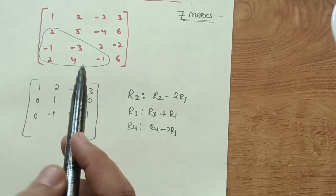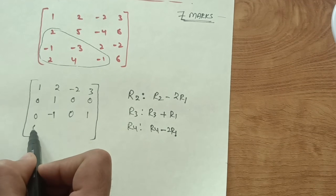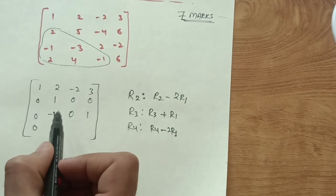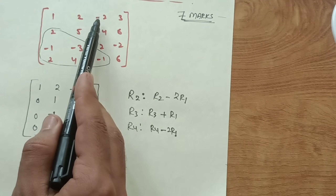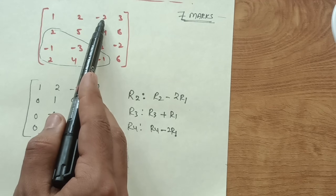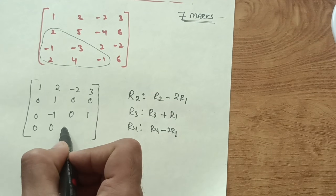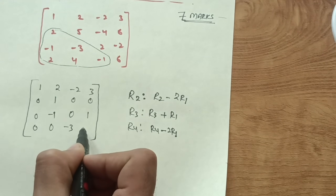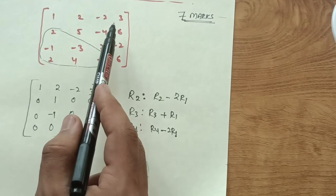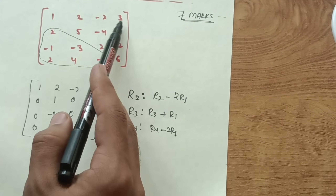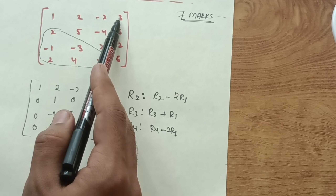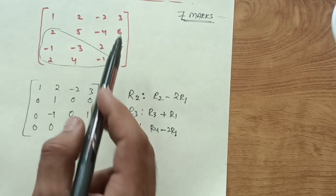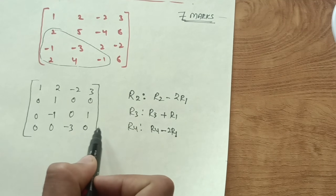Continuing R4 - 2R1: the third entry becomes -1 - 2×(-2) = -1 + 4 = -3. For the last entry: 6 - 2×3 = 6 - 6 = 0. So row 4 becomes [0, 0, -3, 0] after this step.